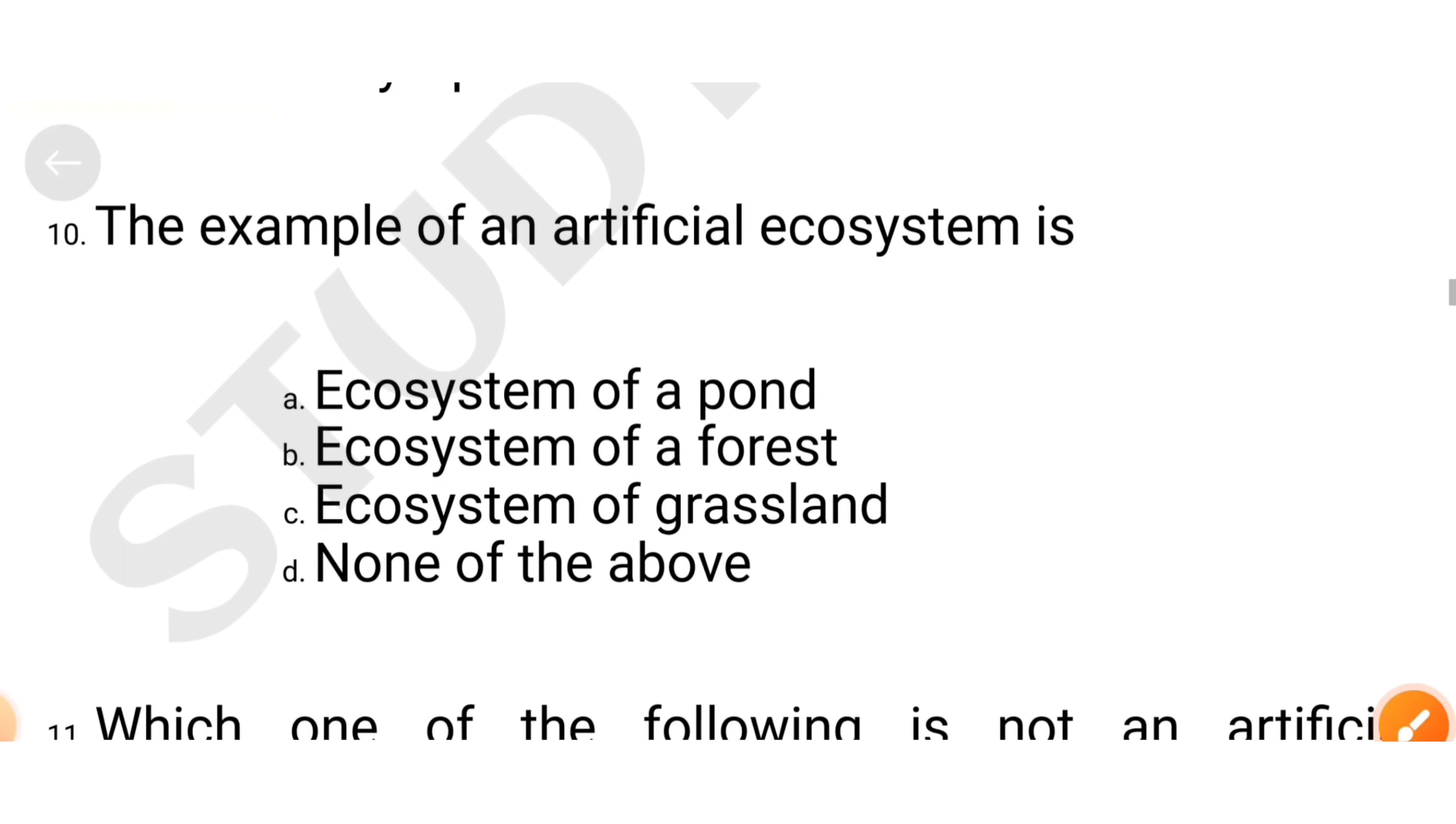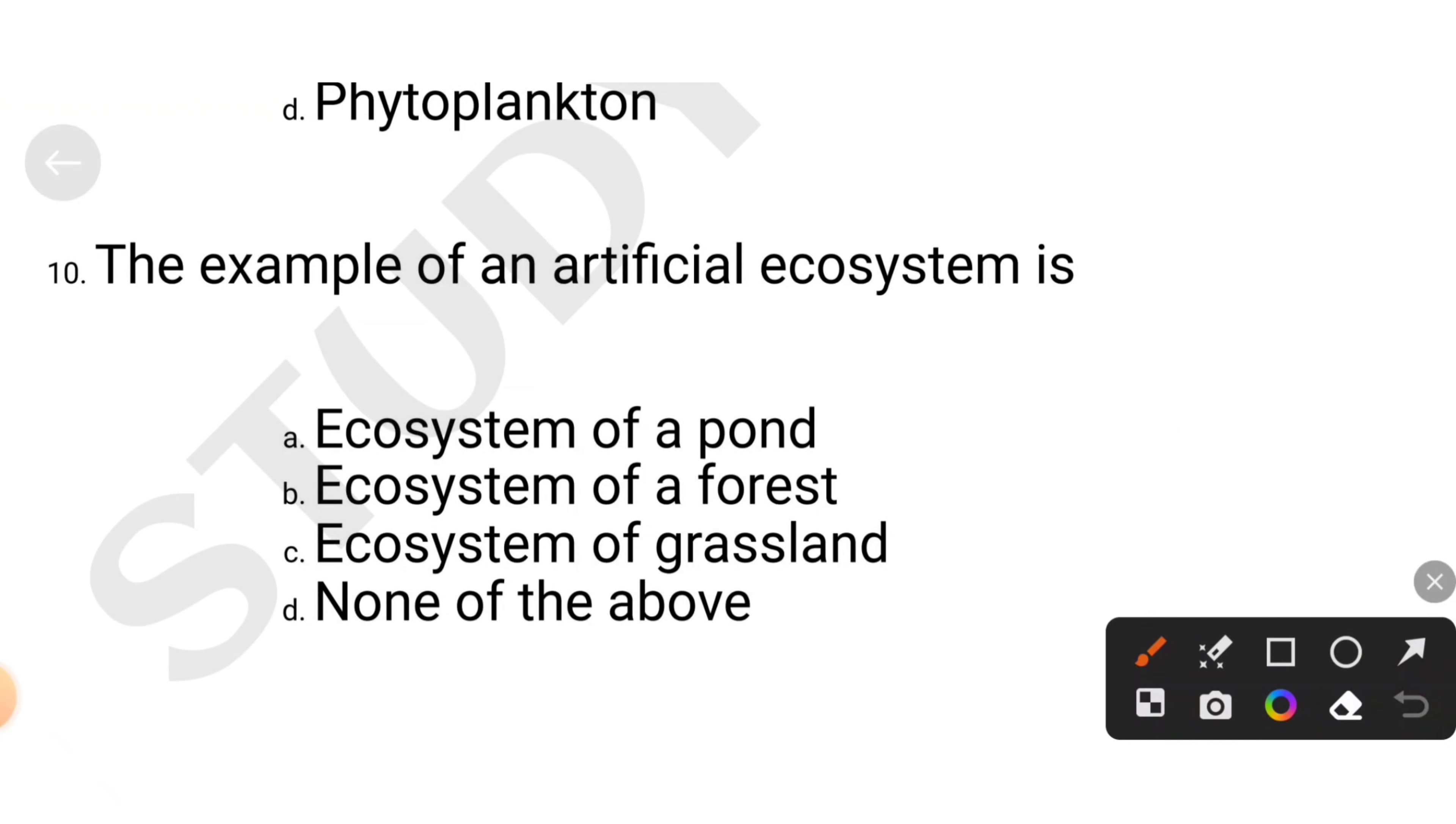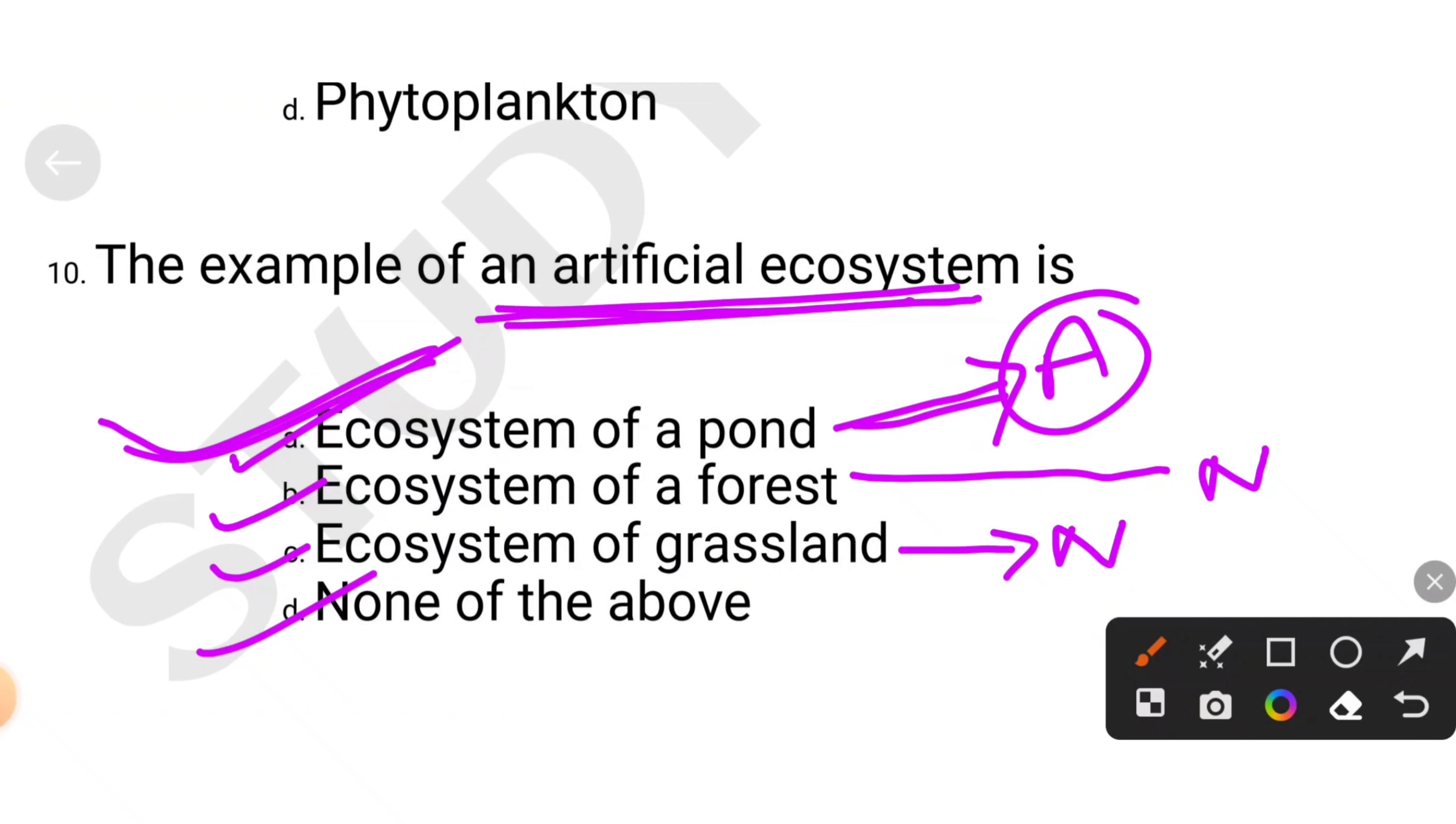We have the example of an artificial ecosystem. Ecosystem of a pond, ecosystem of a forest, grassland. Look, grassland is also natural. Forest is also natural. But pond is artificially developed. What is the correct option? Artificial ecosystem is what? Ecosystem of a pond.